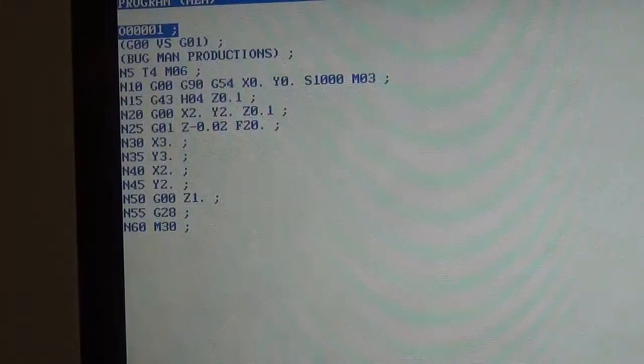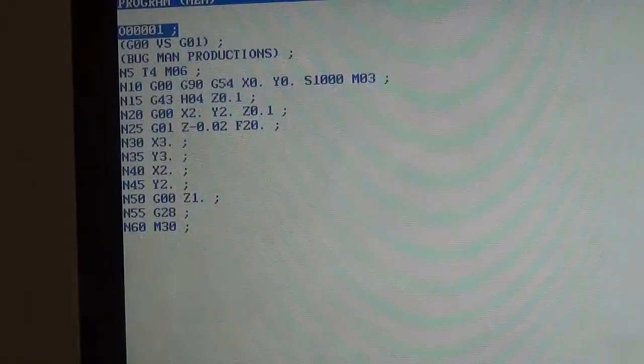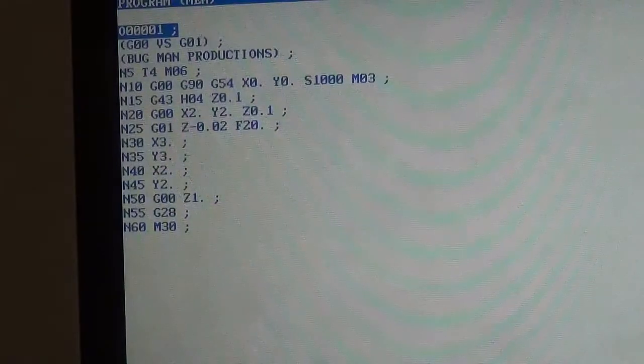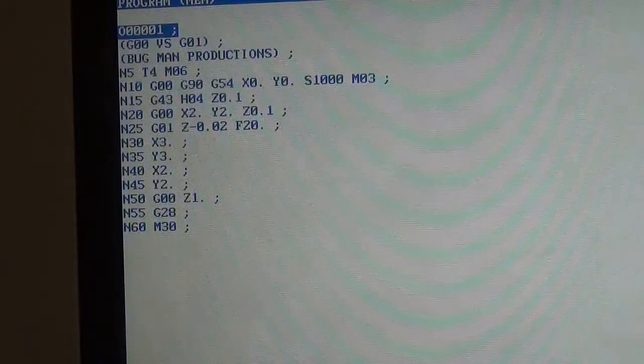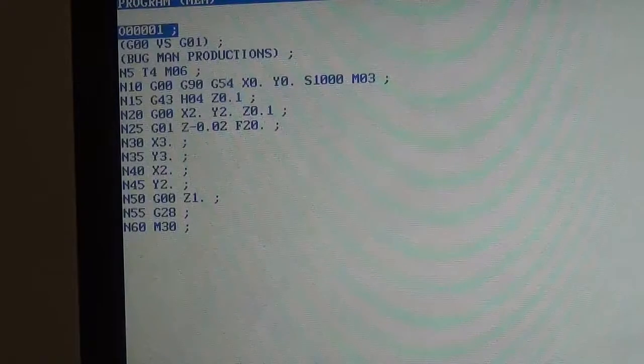On line N5, calling up tool 4. N10 is saying I'm in the absolute coordinate system. G54 is my work coordinate system. Going to an x of 0, y of 0. Turn the spindle on to a spindle speed of 1000.